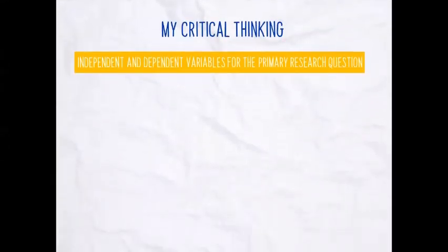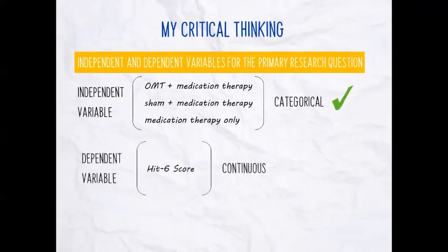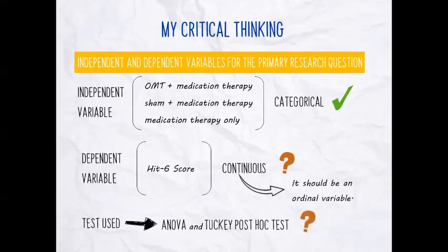And now, here comes my critical thinking. Let's start with the independent and dependent variables for the primary research question. The independent variable is the intervention — OMT plus medication therapy for the intervention group, and the two control groups: sham plus medication therapy, and medication therapy only. It is categorical, and I agree with the authors. The dependent variable is the HIT-6 score. The authors considered it continuous, but I put a question mark here, because as I said before, it should be an ordinal variable. The test they used was ANOVA followed by the Tukey post hoc test — again a question mark, because for ordinal variables, we should implement non-parametric tests.